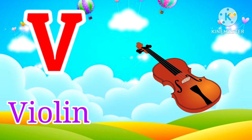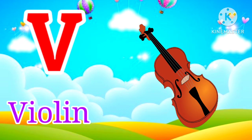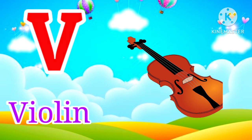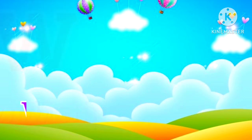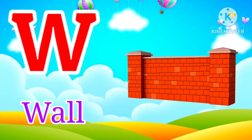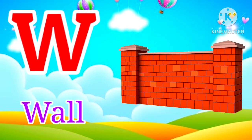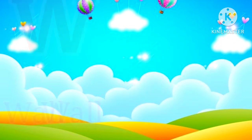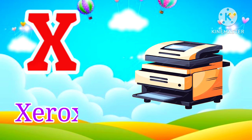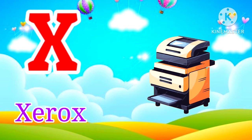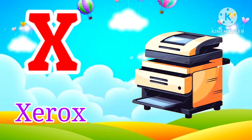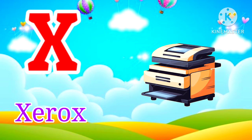V for Violet. Violet means Violet. W for Wall. Wall means Diwar. X for X Rock. X Rock means X Rock.